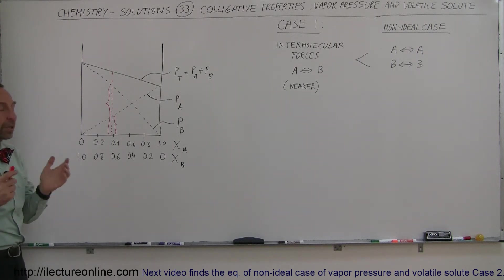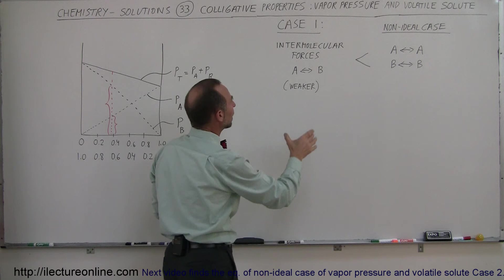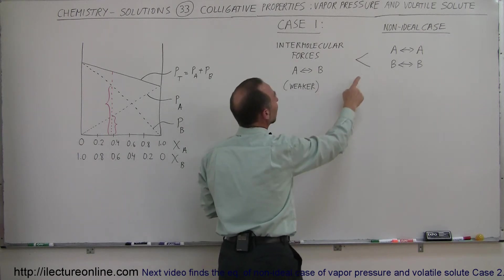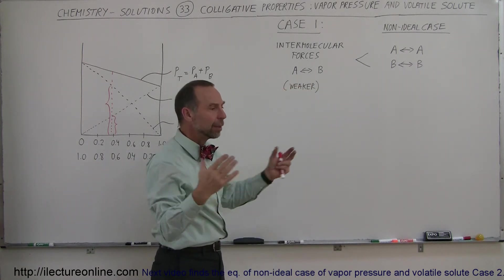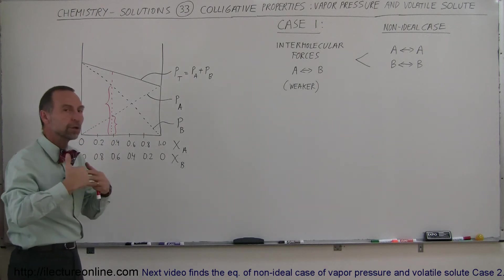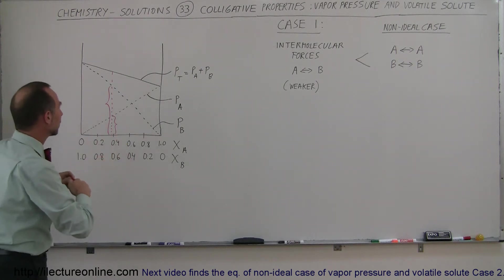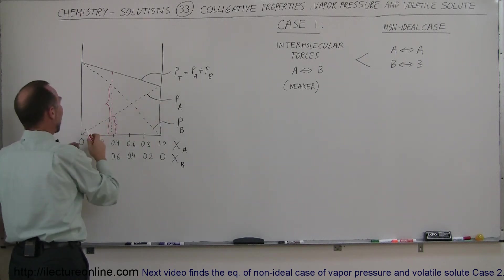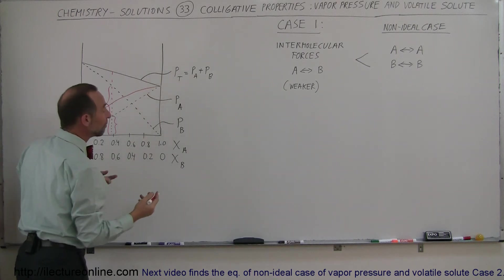But in the case where the intermolecular forces are not all the same — where the structure is so different that the intermolecular forces differ — for example, in case one, where the intermolecular forces between molecules of component A and molecules of component B are weaker than the intermolecular forces between molecules of A alone or molecules of B alone, then when you put the two together, there will be less attraction on average. More molecules will go into the vapor phase, and the vapor pressure will increase. The lines are no longer straight or linear; the vapor pressure of A as it's mixed with component B will increase in a curve like this.